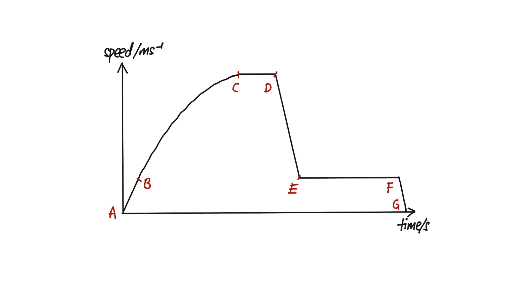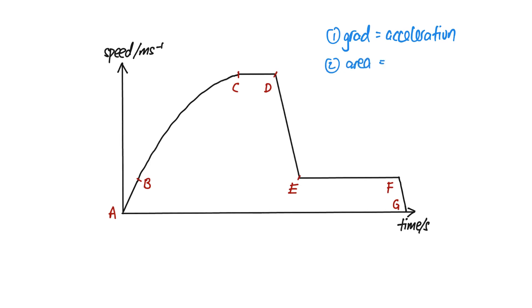In this video, we're going to learn about a typical speed-time graph of a parachute jump. For a speed-time curve, the gradient will represent the acceleration of the object — in this case the parachutist. Secondly, the area underneath the graph will represent the distance traveled by the parachutist.